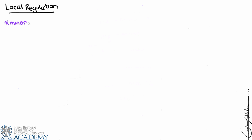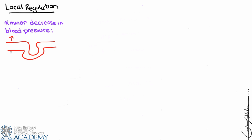Local regulation is responsible for adjusting the diameter of the afferent and efferent arterioles in response to minor changes in blood pressure. If there is a minor decrease in blood pressure, the granular cells recognize decreased stretch at the afferent arteriole and will dilate the afferent arteriole and constrict the efferent arteriole. By dilating afferent and constricting efferent, we increase hydrostatic pressure in the glomerulus, maintaining GFR.